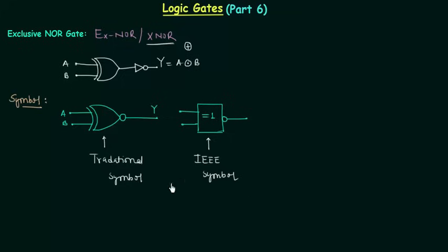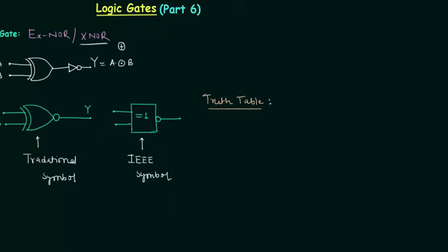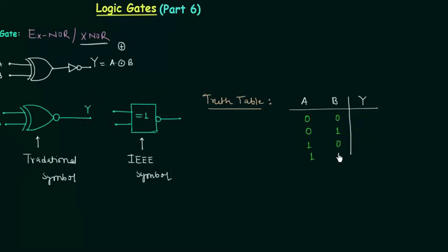Now we will move to the truth table for a two-input XNOR gate. The two inputs are A and B, and the output is Y. The four possible input combinations are: 0,0 / 0,1 / 1,0 / 1,1.